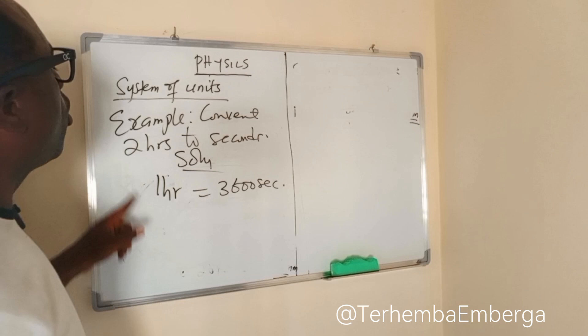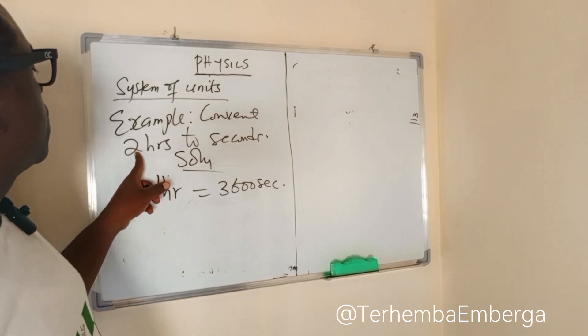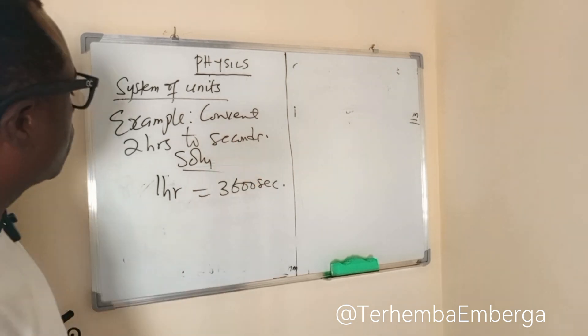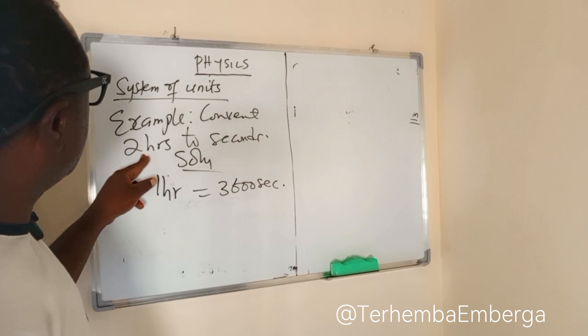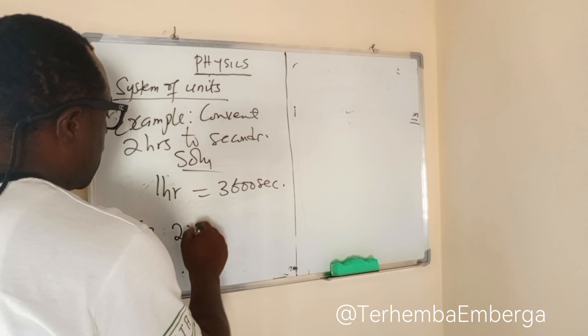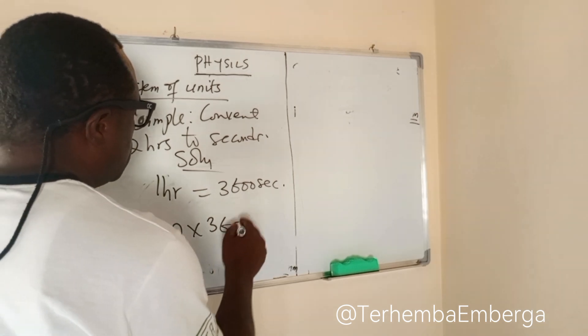So since we are converting from hours, which is a big unit, to seconds, which is a small unit, we simply multiply two hours by this. And we have two times 3,600, which is equal to 7,200 seconds.